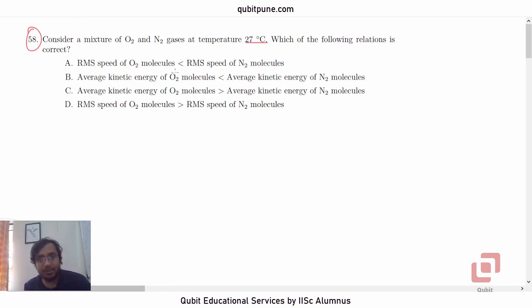Option A: RMS speed of oxygen molecules is less than RMS speed of nitrogen molecules. And if you go to D, it is RMS speed of oxygen molecules greater than RMS speed of N2 molecules. And options B and C are comparing average kinetic energy of oxygen with that of nitrogen molecules.